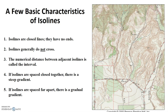Fourth, if isolines are spaced closely together, that means there is a steep gradient. Closely spaced contour lines depict a steep hill. Closely spaced isotherms would depict a region of rapidly changing temperature from one place to another. Fifth, if isolines are spaced far apart, there is a gradual gradient. So contour lines spaced far apart would depict a very gradual slope.